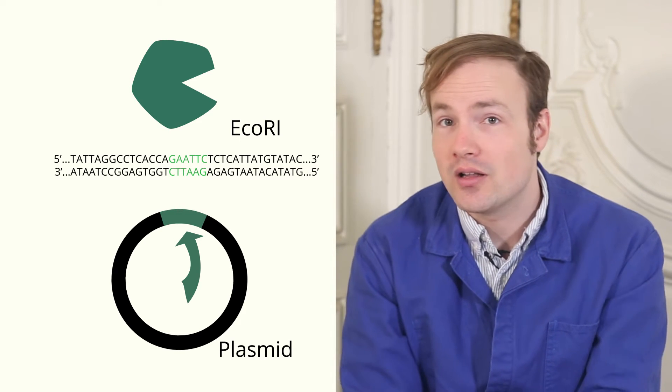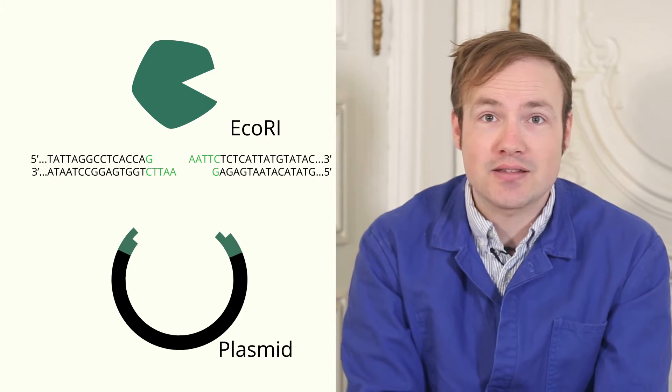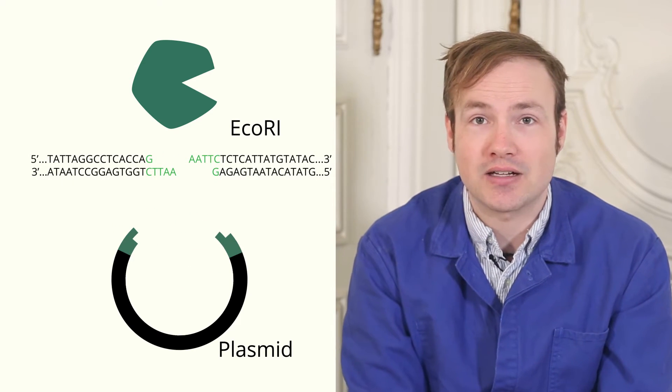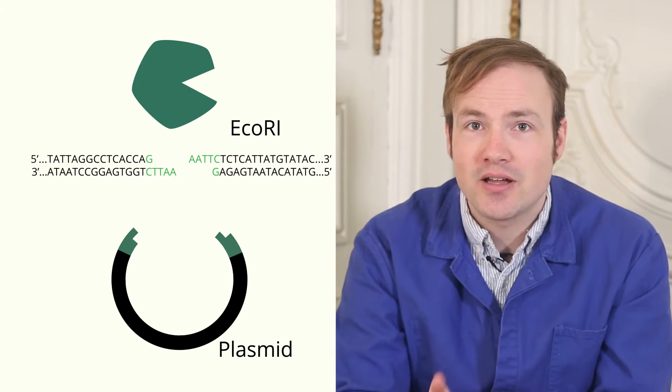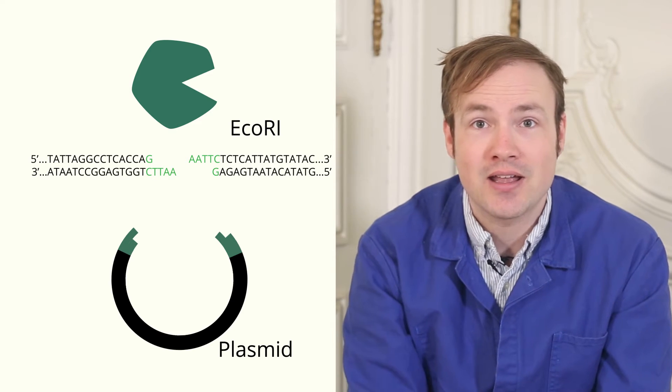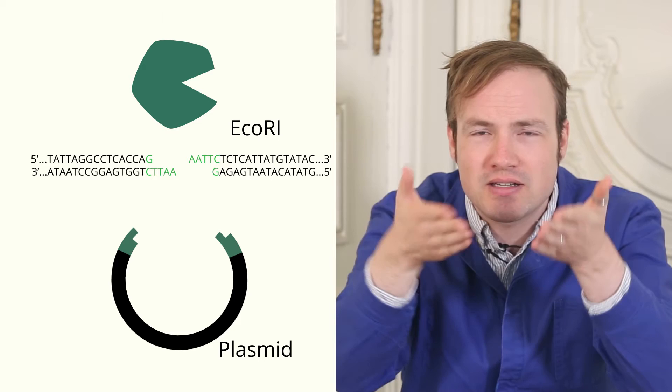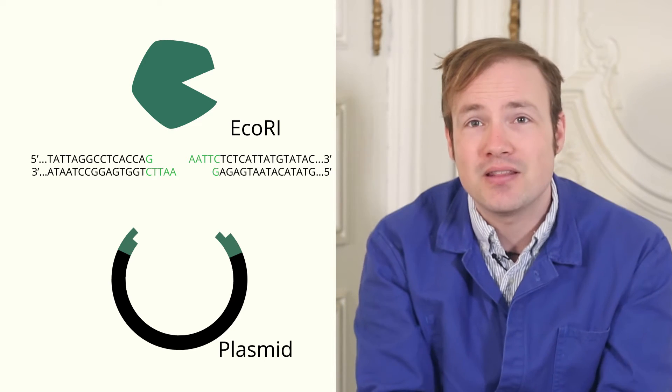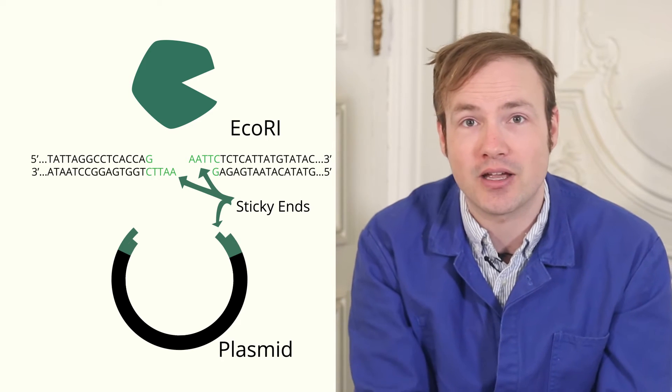Now, let's perform a digest by mixing the plasmid and the enzyme together. The enzyme finds the restriction site and cuts the plasmid open. But ECO-R1 enzyme doesn't cut straight through the double-stranded DNA. Instead, it cuts at a funny angle, leaving these little pieces of single-stranded DNA poking out. These are called sticky ends, and they'll help us later when we're trying to paste our DNA back together again.